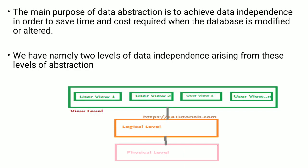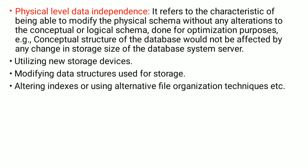The main purpose of data abstraction is to achieve data independence in order to reduce the cost required when the database is modified or altered. There are two levels of data independence. Physical data independence refers to the ability to modify the physical schema without any alteration to the conceptual or logical schema, done for optimization purposes. For example, the conceptual structure of the database would not be affected by any change in storage size, utilizing new storage devices, modifying data structures used for storage, or altering indexes or using alternative file organization techniques.